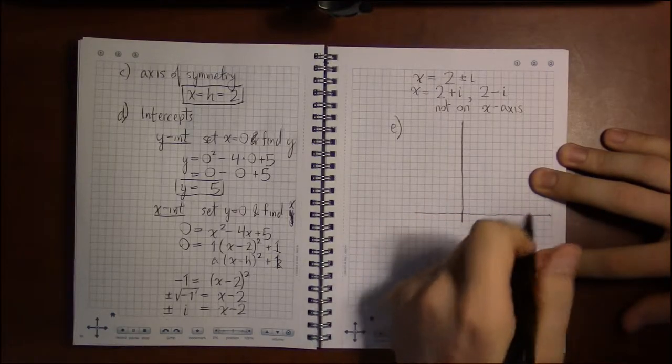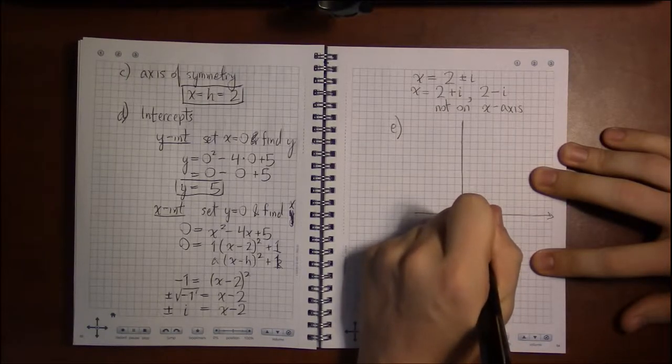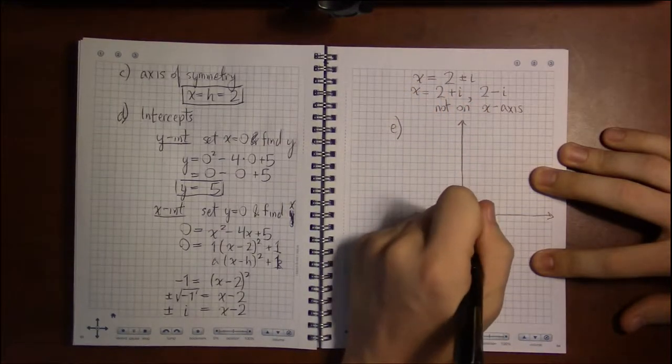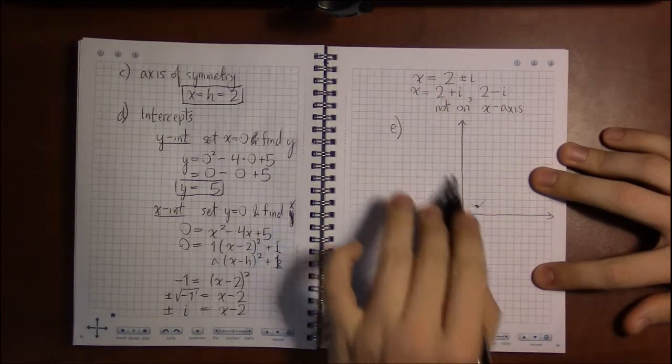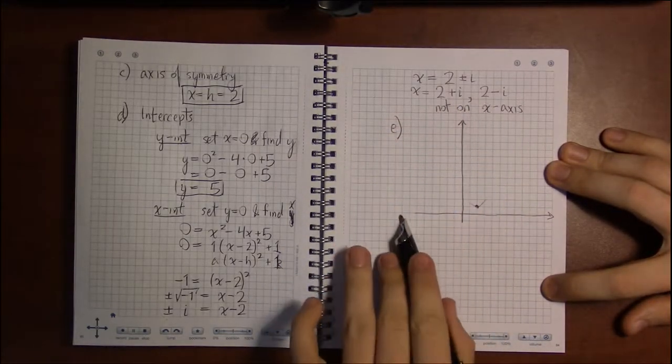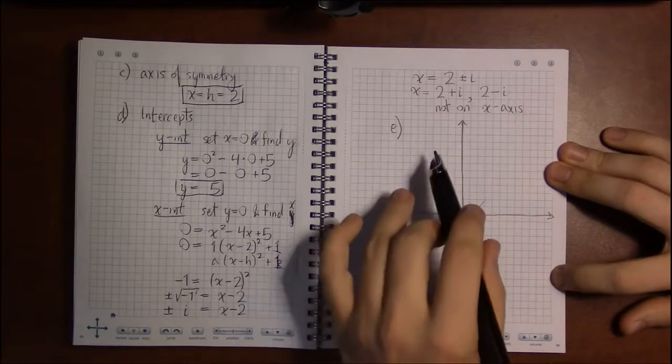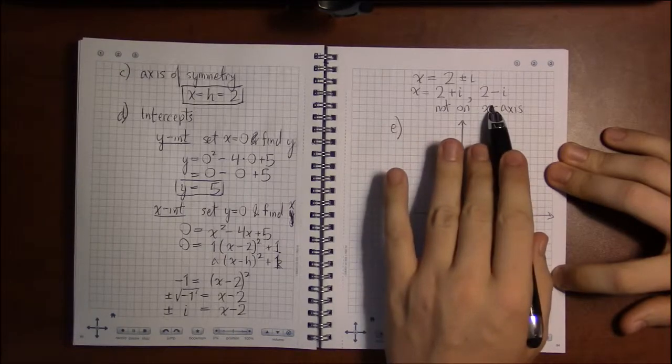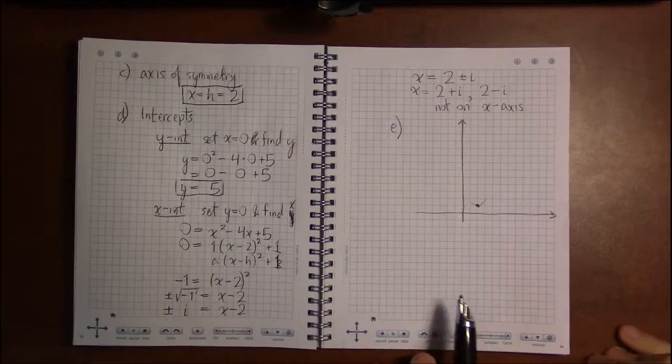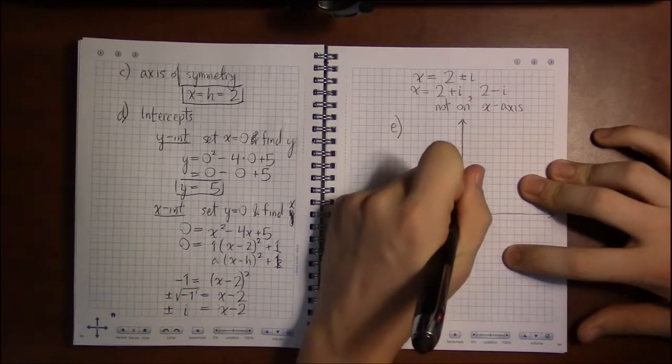It opens up, it sits on the point 2, 1, so it's moving away from the x-axis, so it's never going to touch the x-axis. It will not have real roots or intercepts or x-intercepts. It does have complex ones, but no real ones, which is what's reflected on the graph.